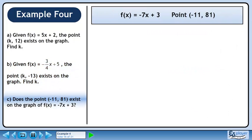In part c, we are asked: does the point (-11, 81) exist on the graph of f(x) = -7x + 3?